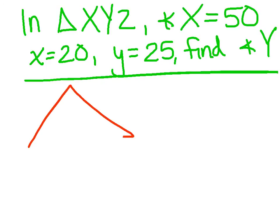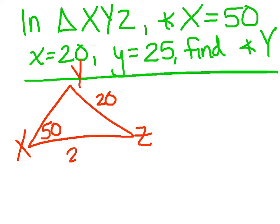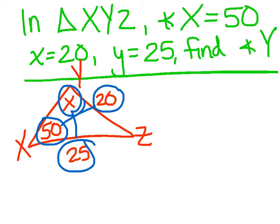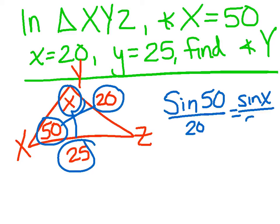In triangle XYZ, so again, quick sketch, angle X equals 50, side X equals 20, side Y equals 25, find angle Y. Notice we've got the side, angle across, side, angle across. So that's that law of sines. So they don't use A, B, and C. No big deal. You can use any letters in the world you want. Remember, it's the sine goes with the angle. So I'm going to say the sine of 50 over the side, 20, equals the sine of X over its partner side, 25. Remember, just keep the partners together. Angle, side across, angle, side across.